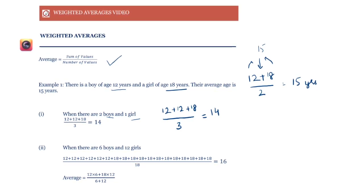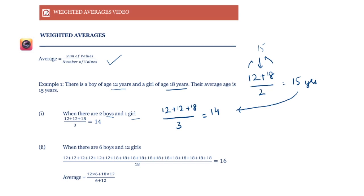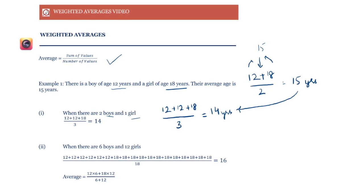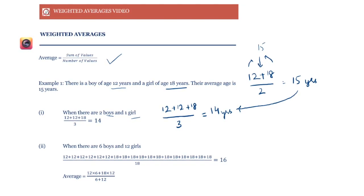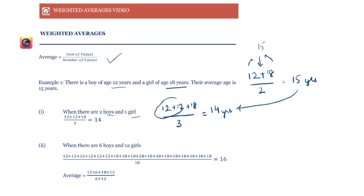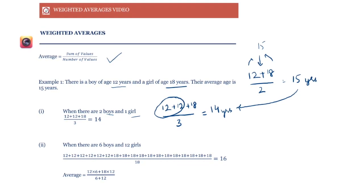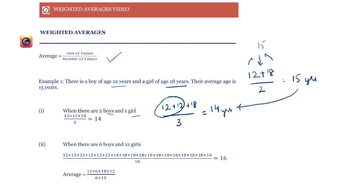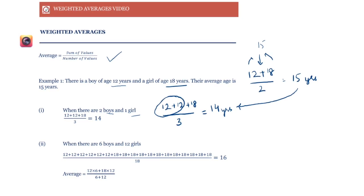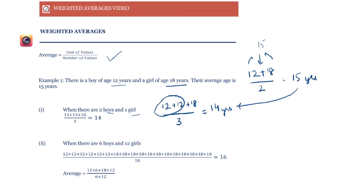The average has moved from 15 years to 14 years. It has moved closer to the age of the boys. That is because we have two boys, so the weight given to the boys is more, and that is why the average has moved closer to their age.